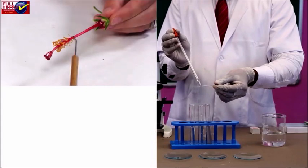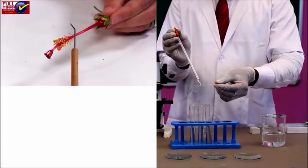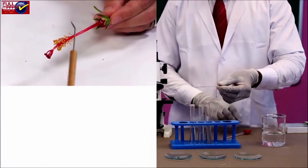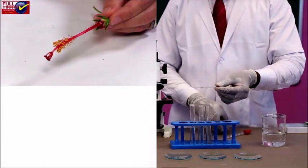Using a dropper, take some medium and put two drops of it on a clean glass slide. Now take a mature flower and dust a few pollen grains from its stamen onto the drop on the slide.